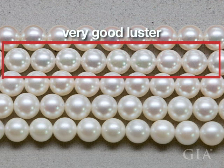If we step down one level to very good, you can see it's still pretty bright but not quite as bright as the excellent. It's starting to be a little bit less sharp around the edges — a little softer on the edges. So this is still bright but not quite as sharp; it's near sharp.